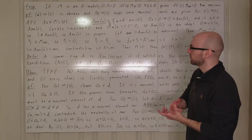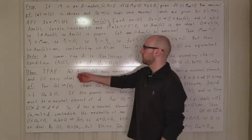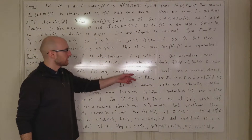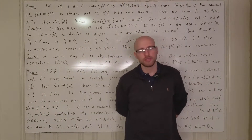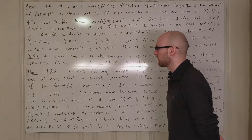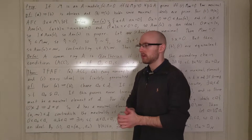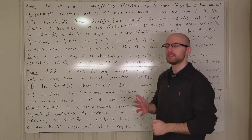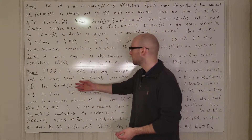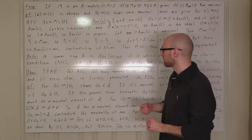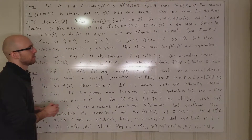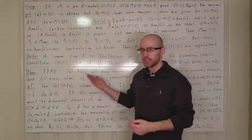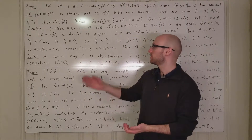There are three equivalent conditions for being Noetherian. First, the ascending chain condition, which is our original definition. Second, every non-empty set of ideals has a maximal element — this comes up less in proofs. Third, every ideal is finitely generated — this is especially useful, particularly for the Hilbert Basis Theorem. As a corollary, principal ideal domains are Noetherian because every ideal is generated by one element and hence finitely generated.